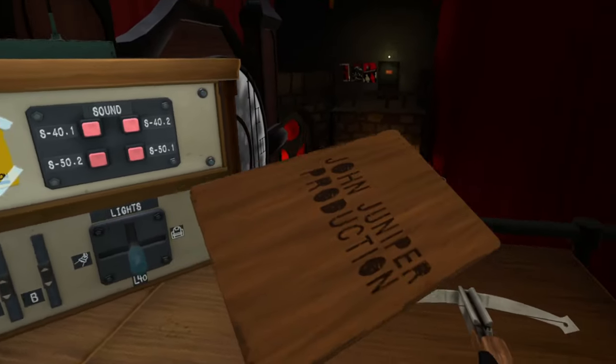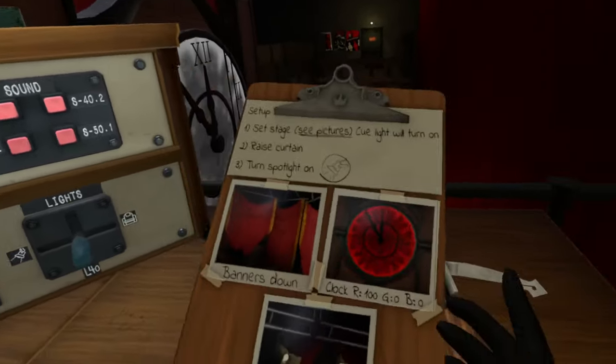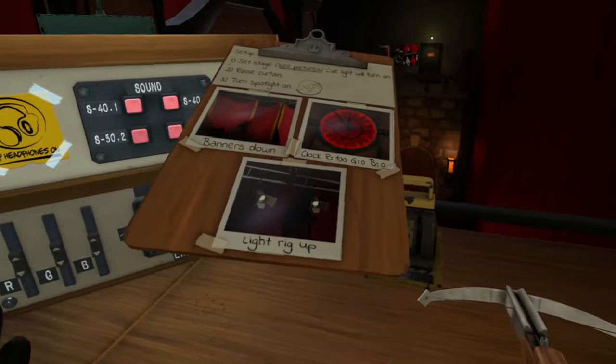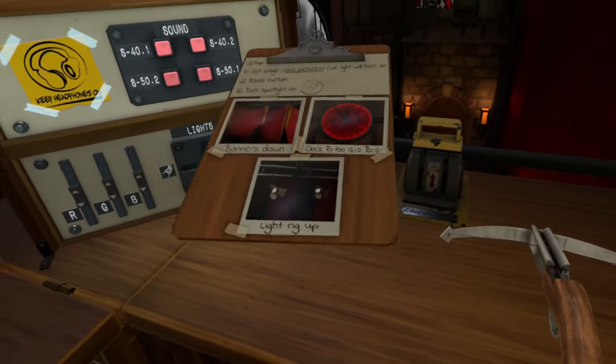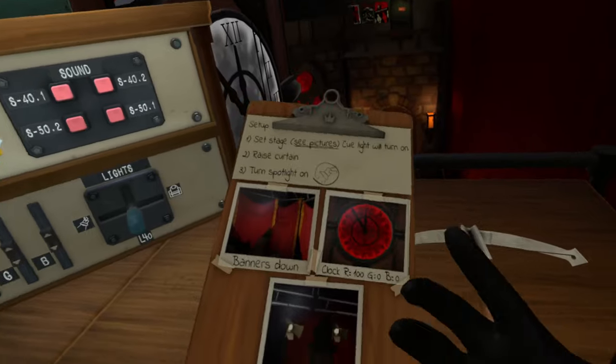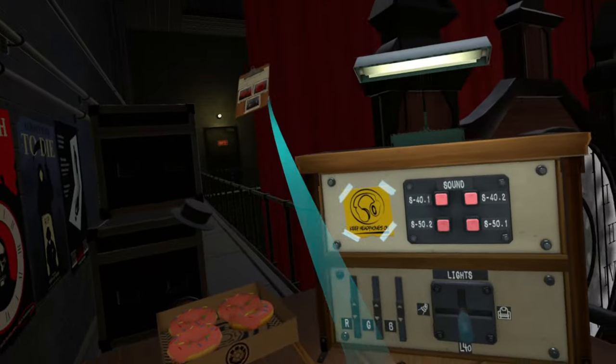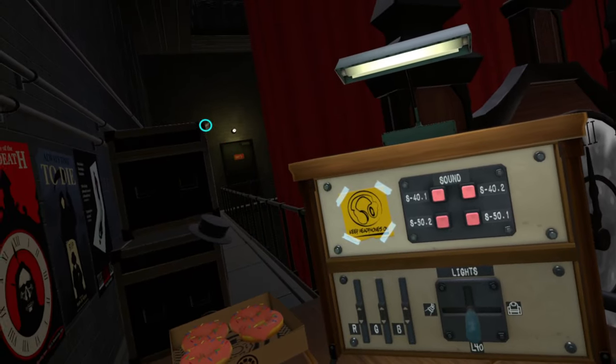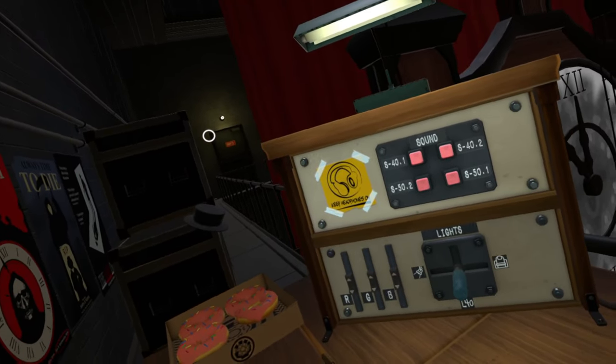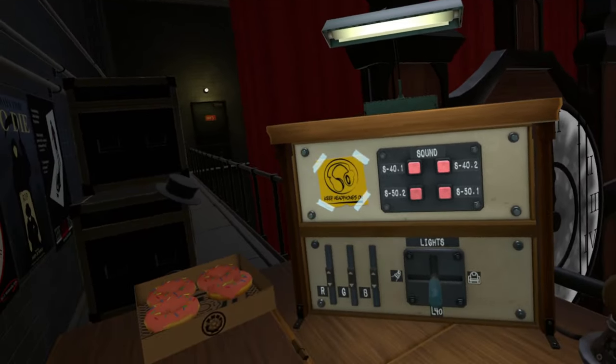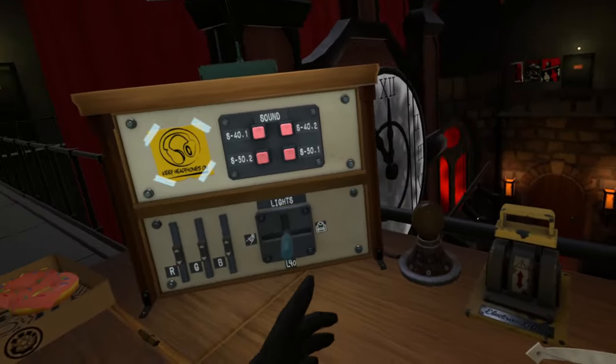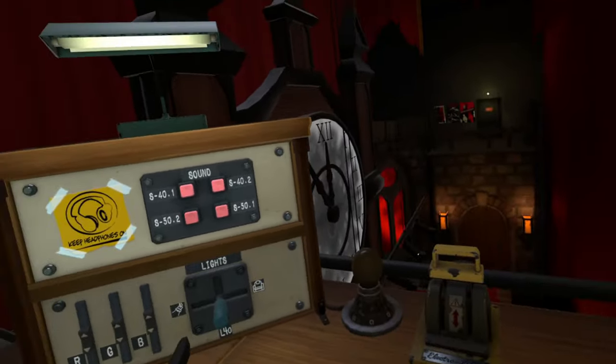To kind of showcase this in another thing, let's say I take this nice John Juniper production's cue sheet and drop it right next to myself. When I do that, it's pretty loud and proud. It's pretty clear that this is right here. If I were to drop it all the way over here, though, it sounds significantly quieter, not just because of the volume going down, but also because we're losing those low and high frequencies.